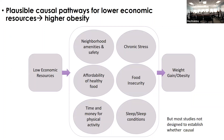There are really plausible pathways by which economic resources might be causally related to increased risk for weight gain and obesity. Economic resources determine the neighborhoods we live in and the amenities and safety we have access to. They determine our ability to afford healthy food, time and money for physical activity. Low economic resources is related to higher levels of chronic stressors, higher probability of being food insecure, and might be related to sleep quality and quantity — each providing a pathway to increased obesity risk.